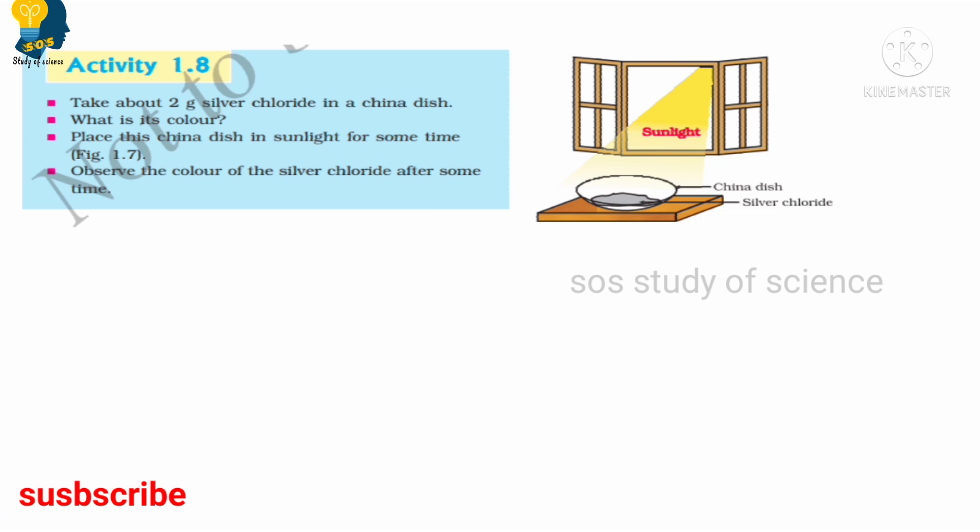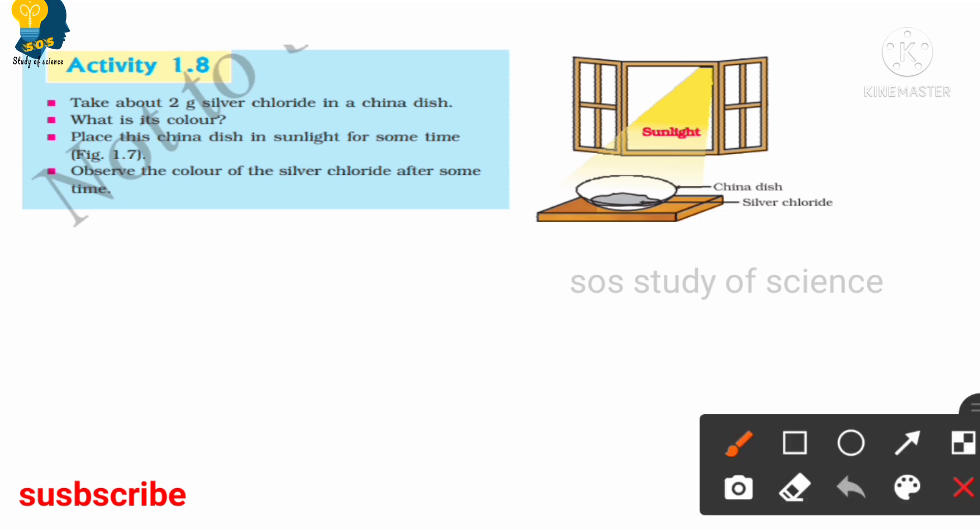When we look at activity 1.8, firstly we need to take a china dish and we need to take 2 grams of silver chloride in this china dish. Before involving the silver chloride into the reaction, let us firstly check the color of silver chloride. Silver chloride is silver white in color.